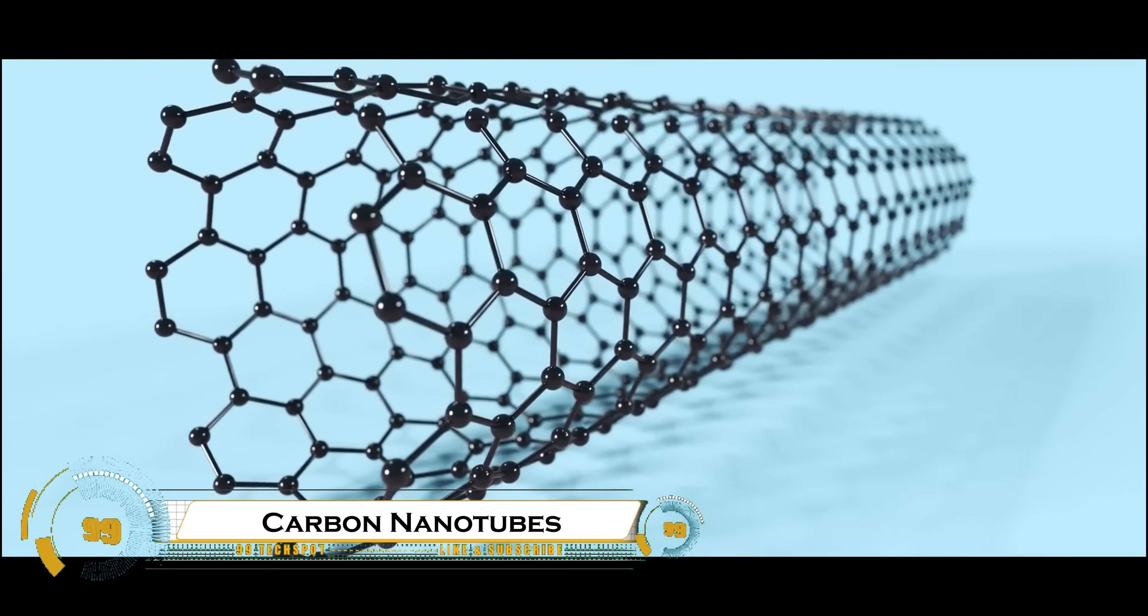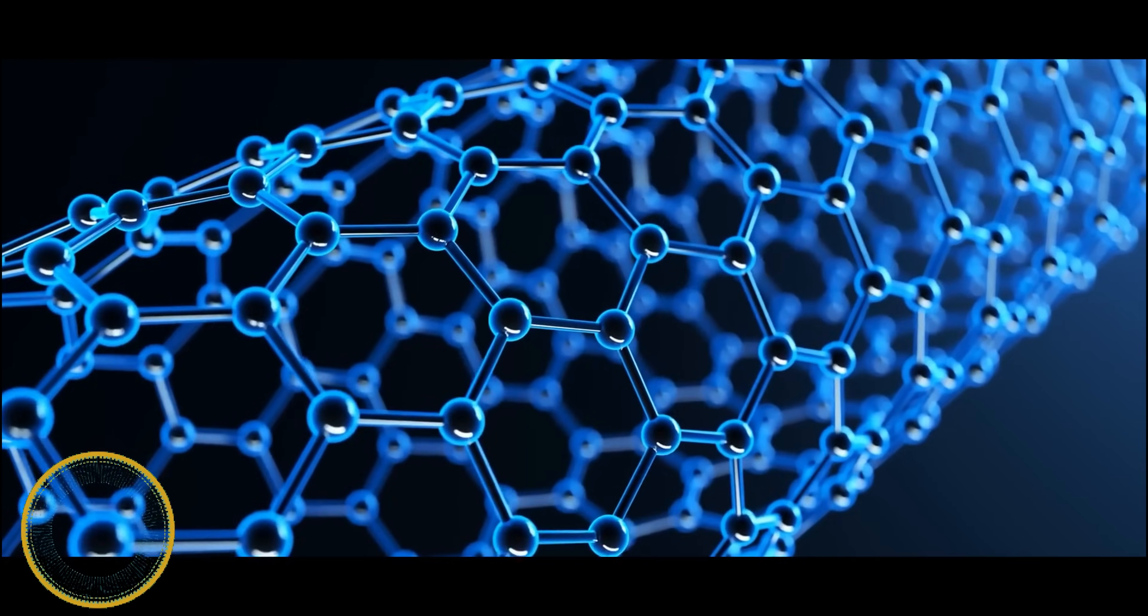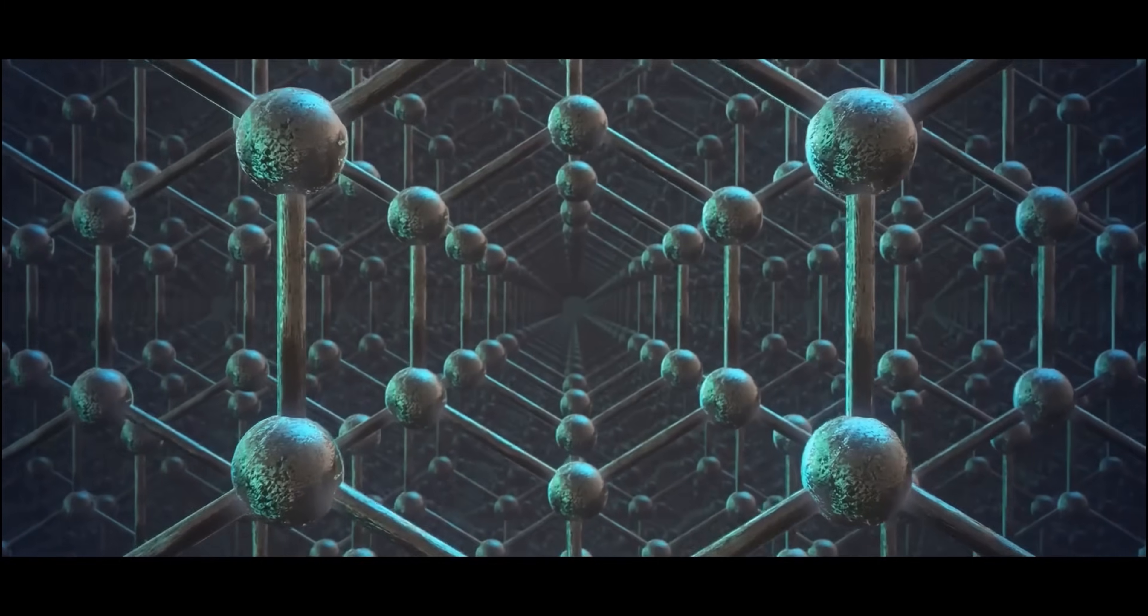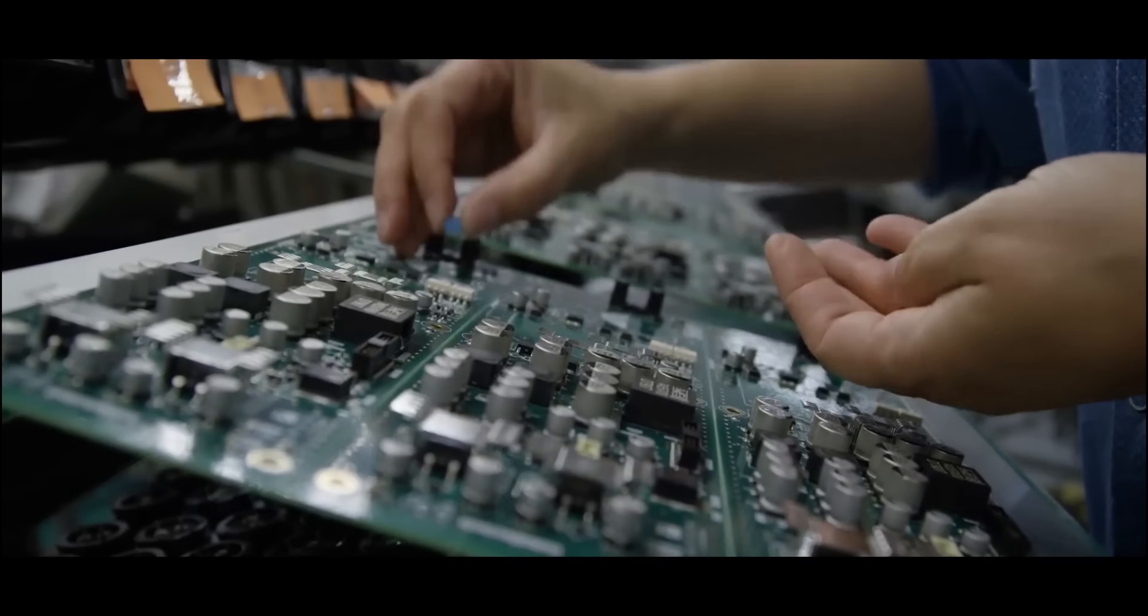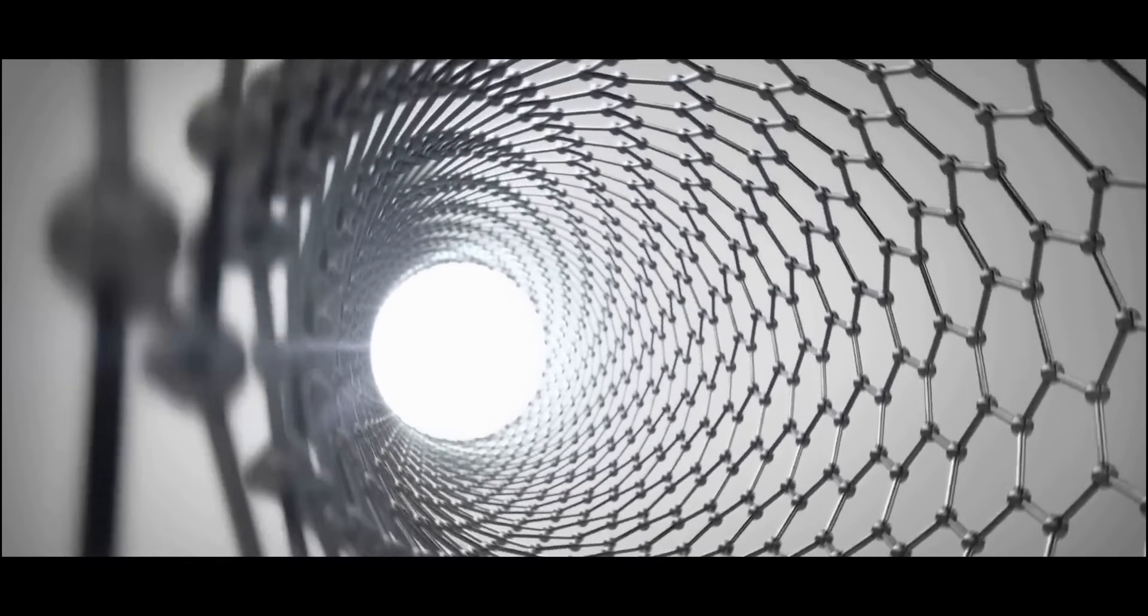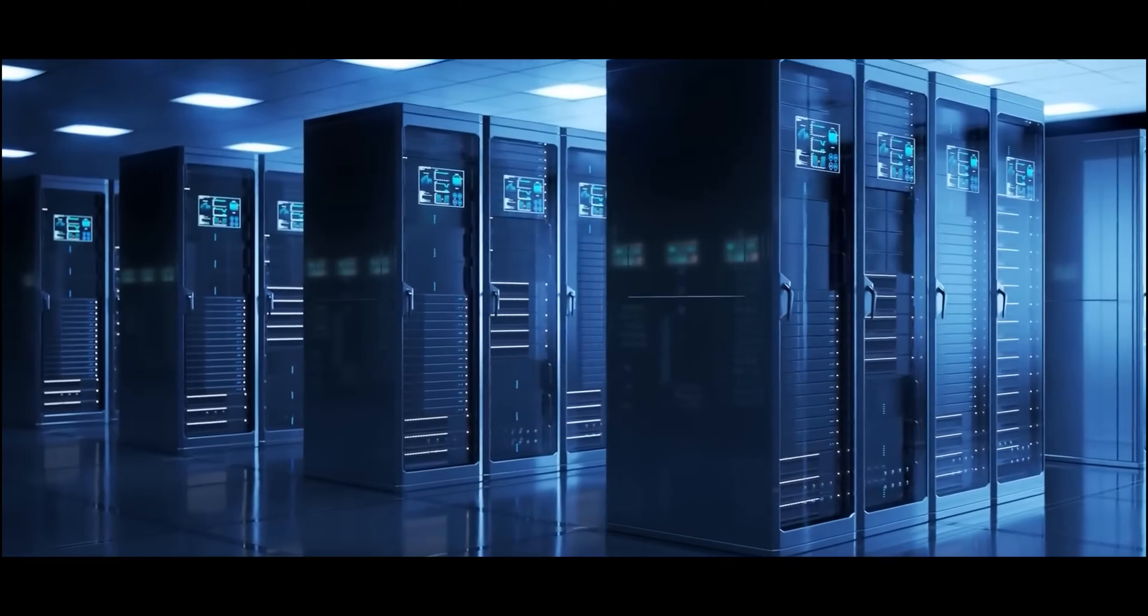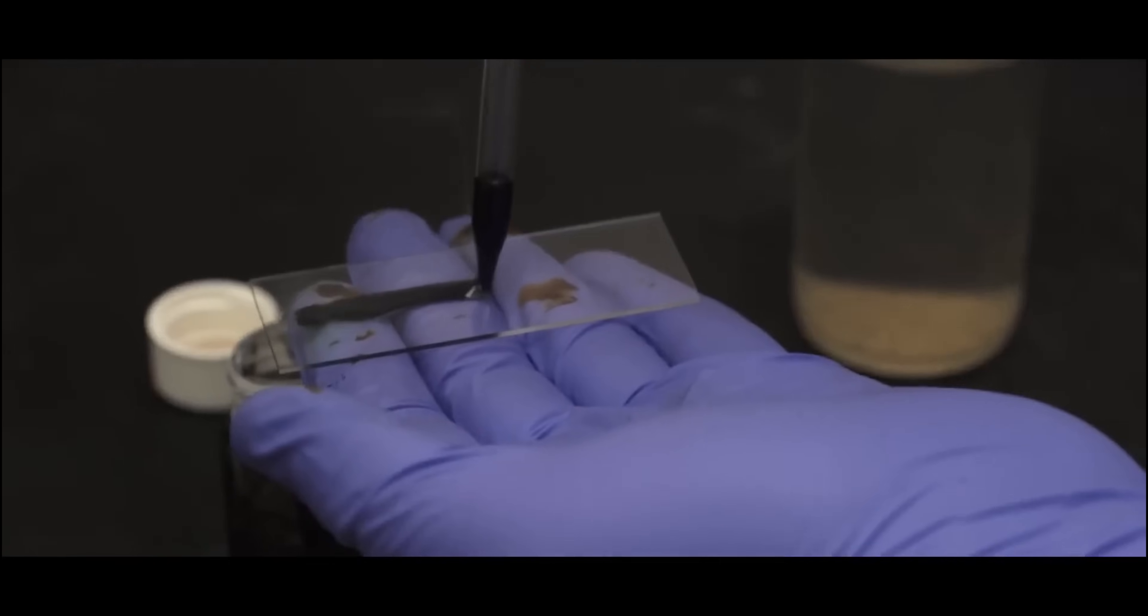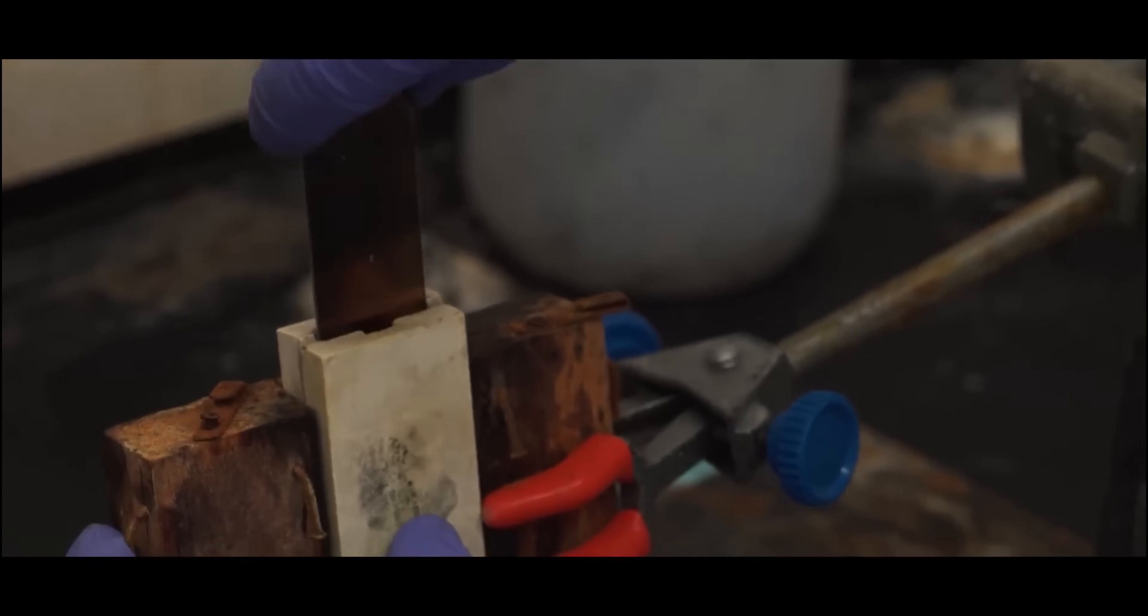Carbon nanotubes. Carbon nanotubes, CNTs, are one of the most revolutionary materials in modern science, offering unparalleled strength, conductivity, and flexibility. These cylindrical molecules, made entirely of carbon atoms arranged in a hexagonal lattice, are stronger than steel yet lighter than aluminum. Their exceptional electrical and thermal conductivity makes them ideal for advanced electronics, energy storage, and even space applications.